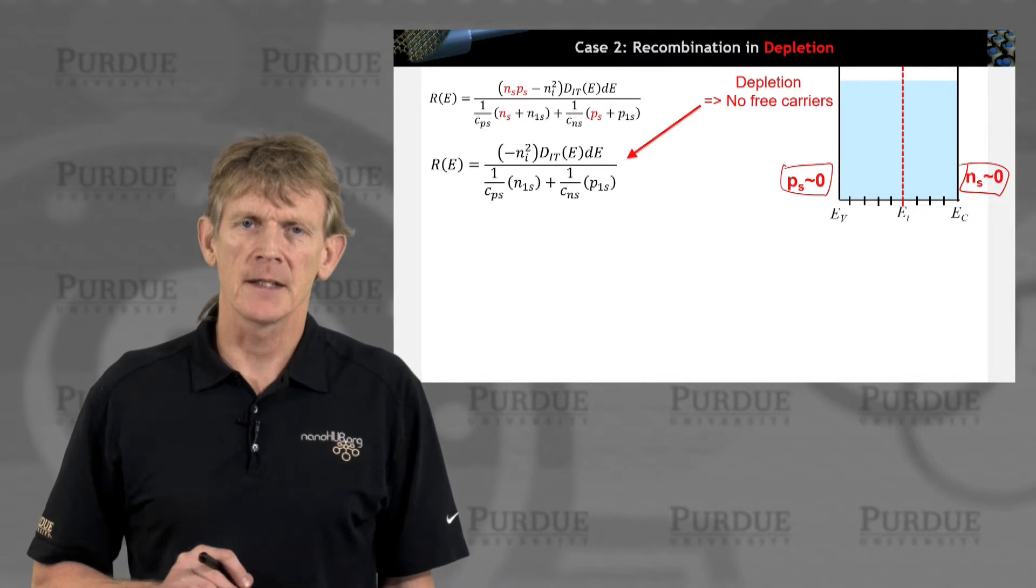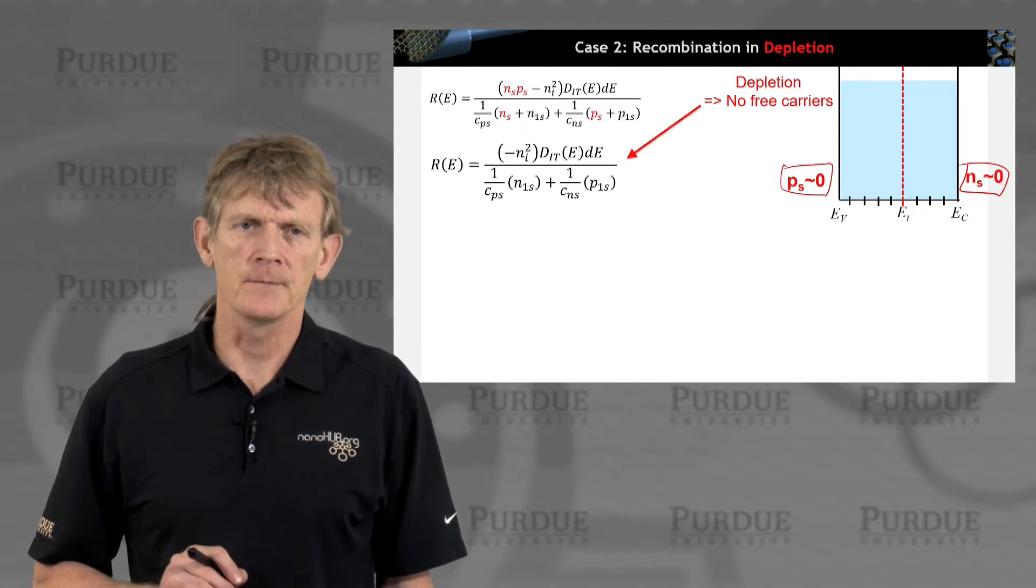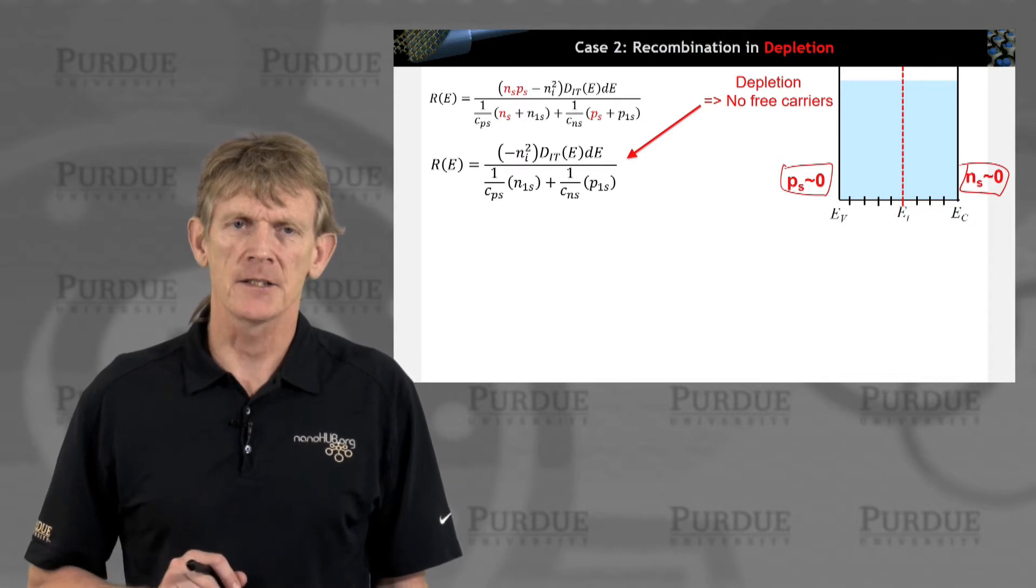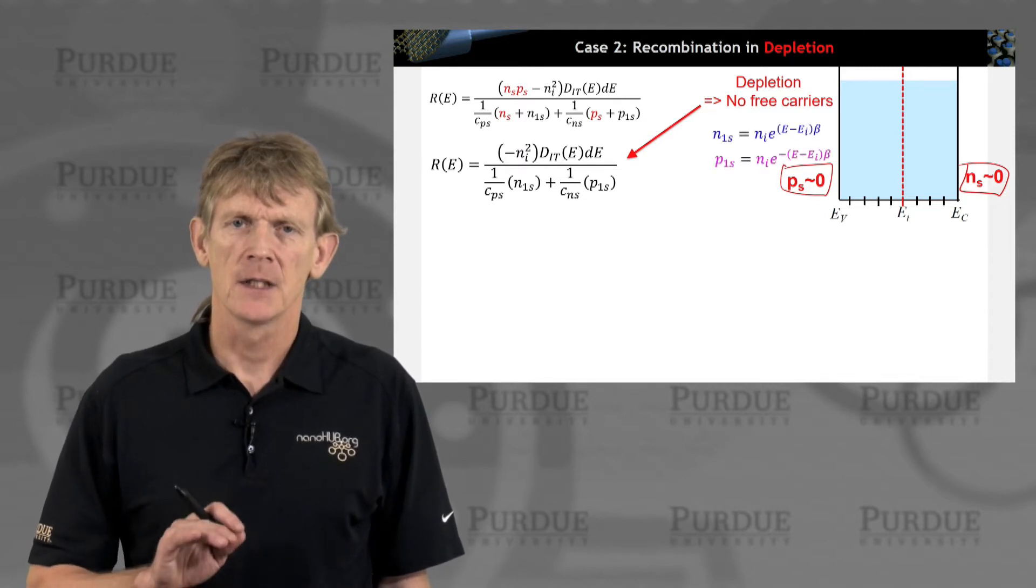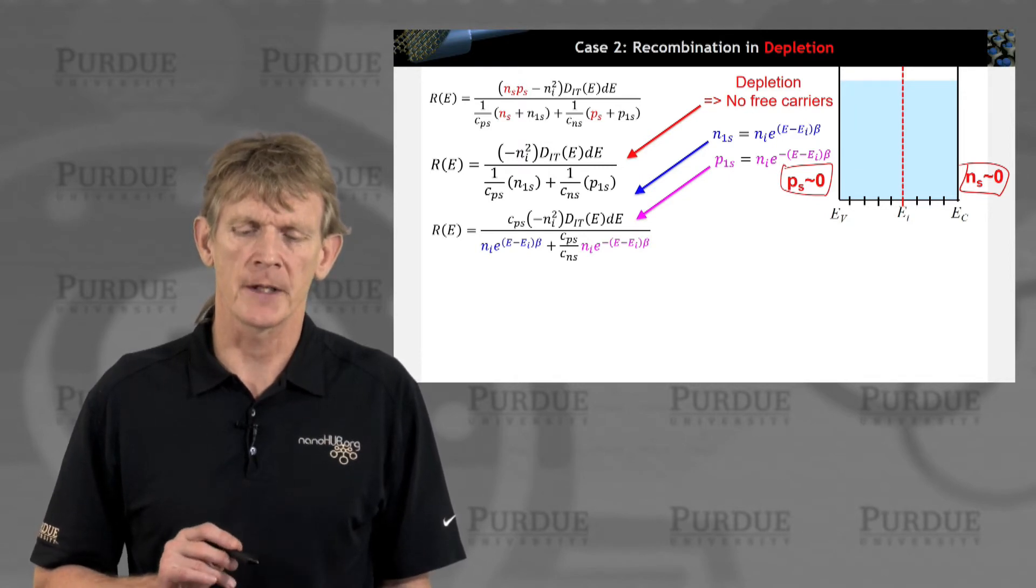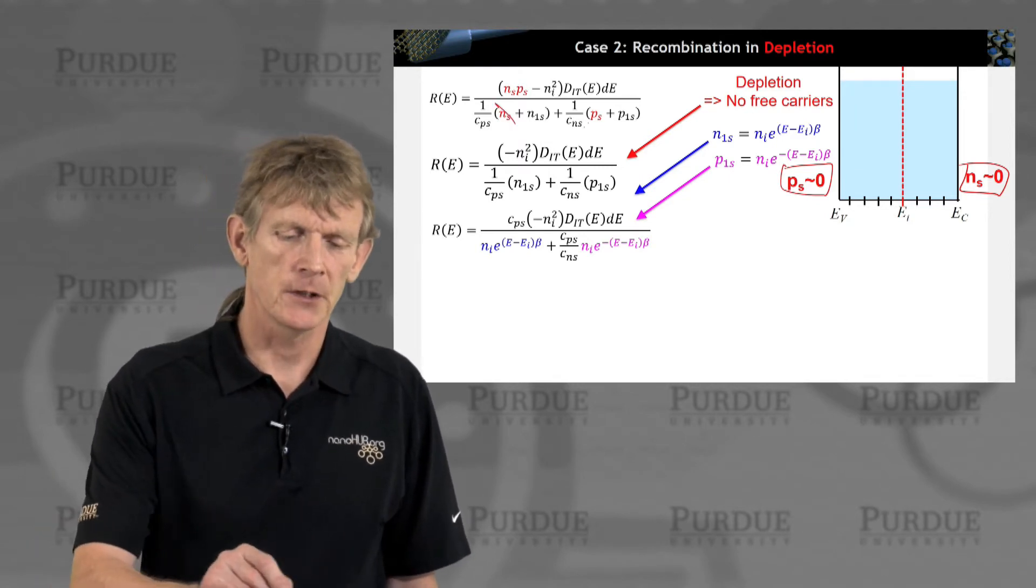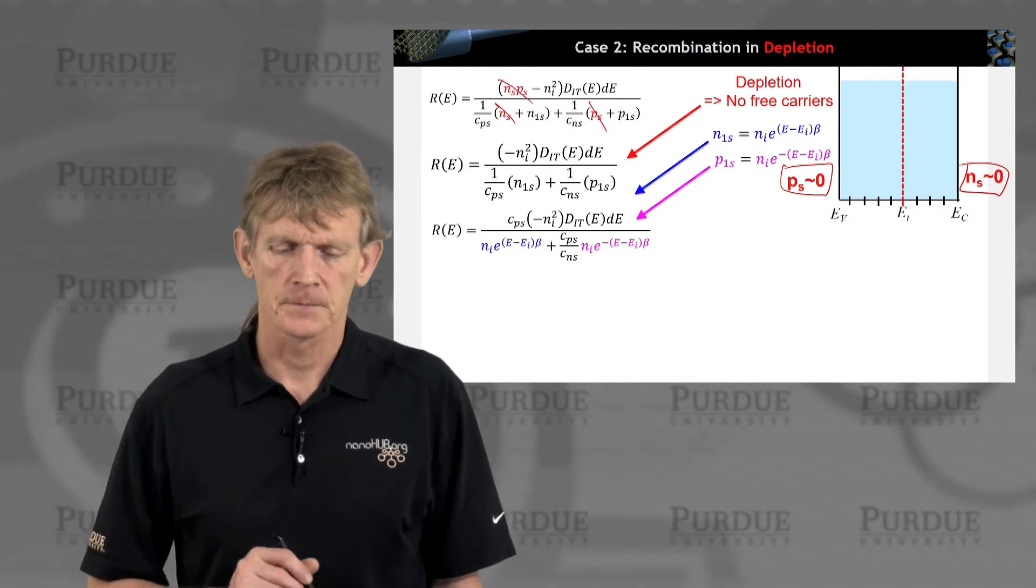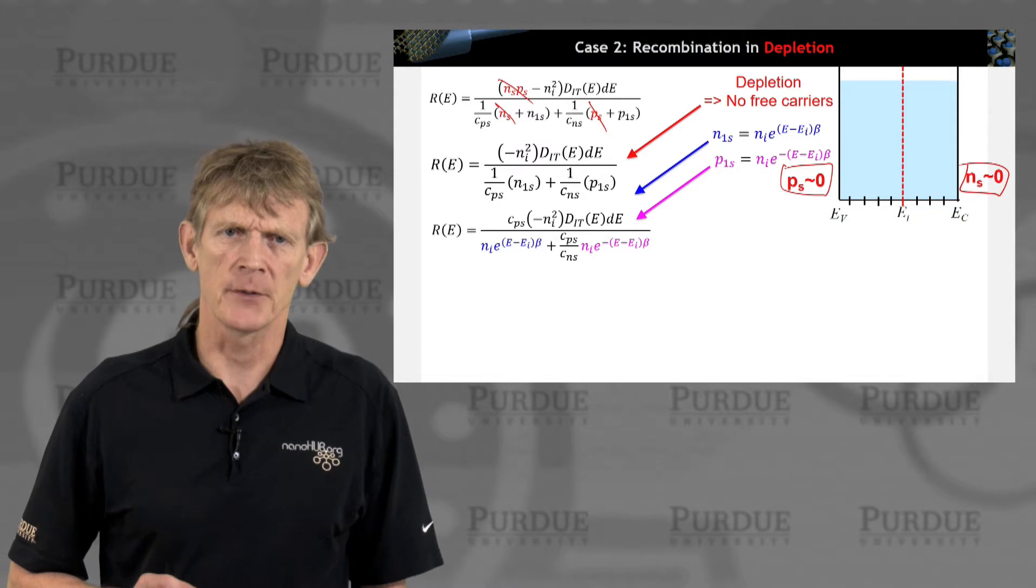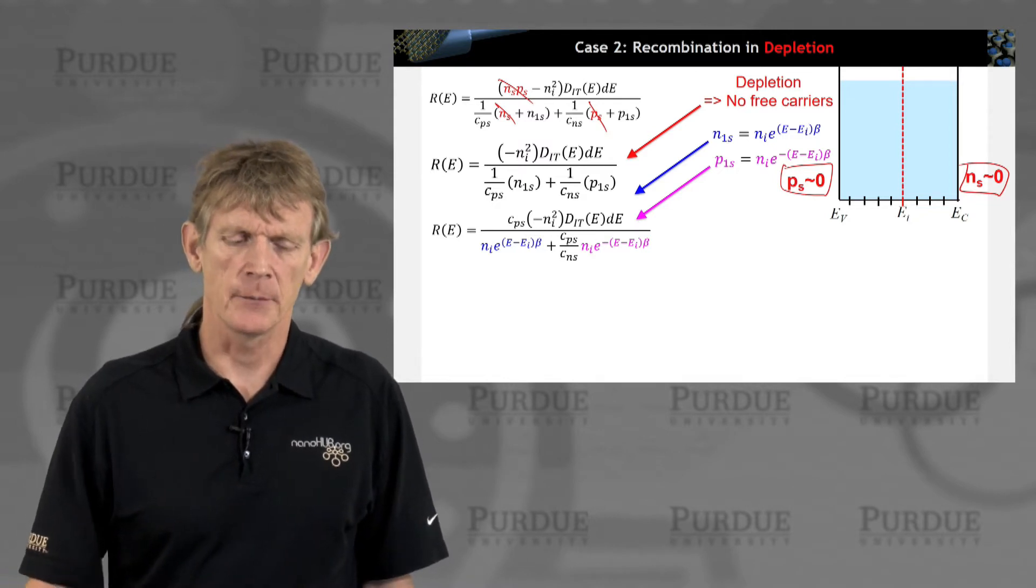Remember that P1 and N1 are determined by energy levels at the intrinsic level. They're not going to be very tiny. So those are the surviving terms compared to N. We really cross out these terms here.